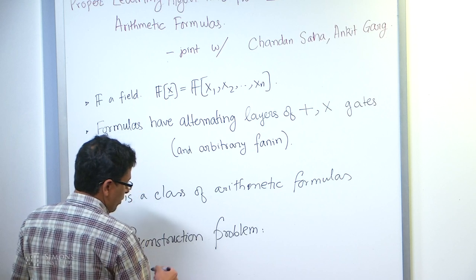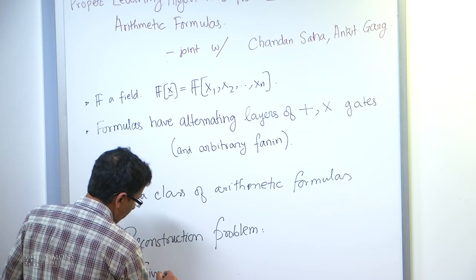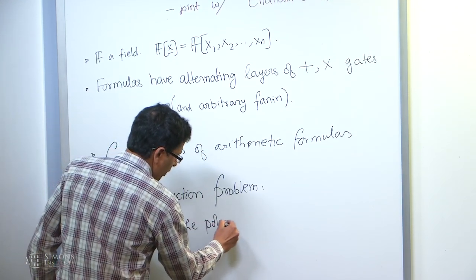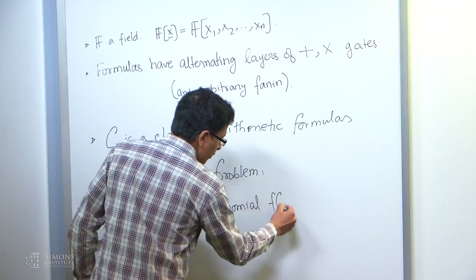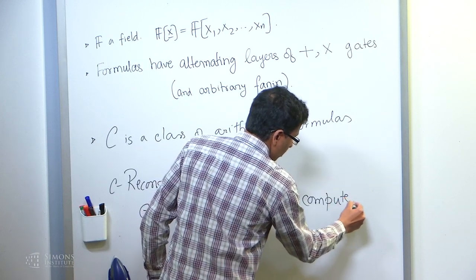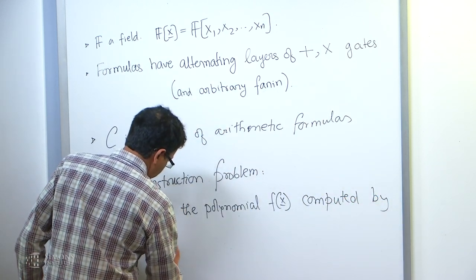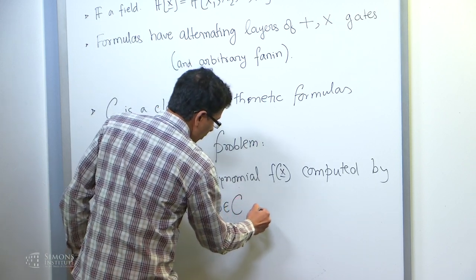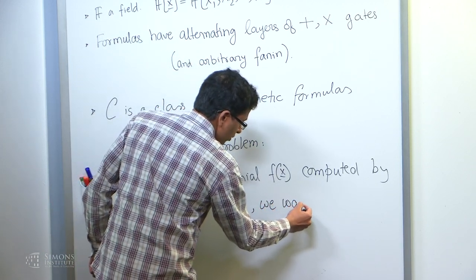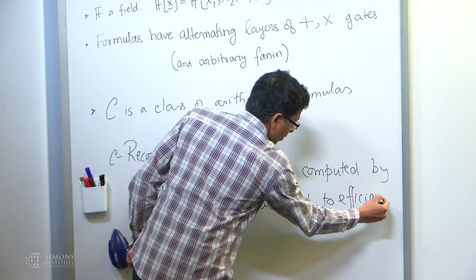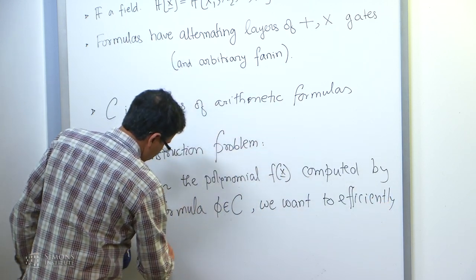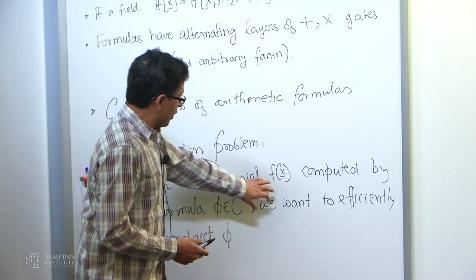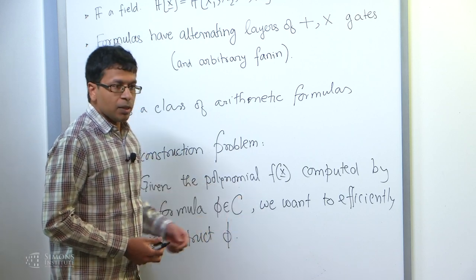The following natural problem: given the polynomial F, which is the output of some formula phi in C, we want to efficiently reconstruct phi. Or more generally, given a polynomial F, we want to find the smallest formula in that formula class which computes F.